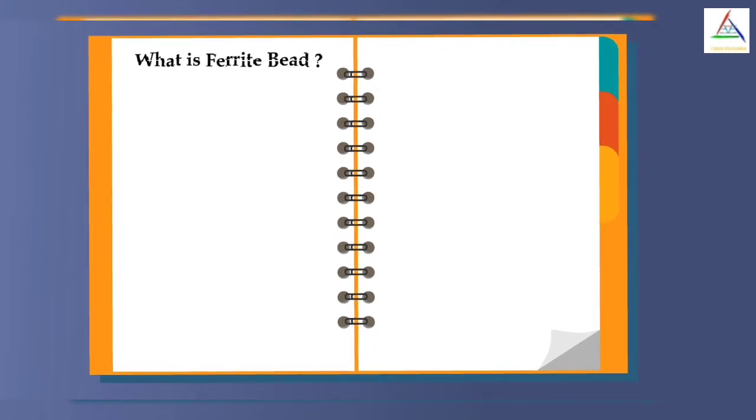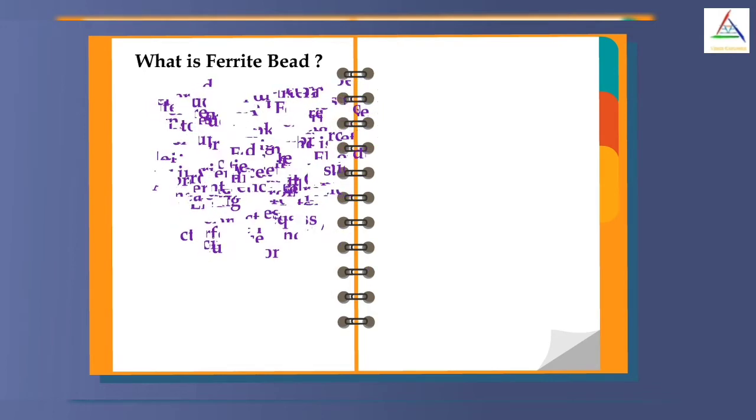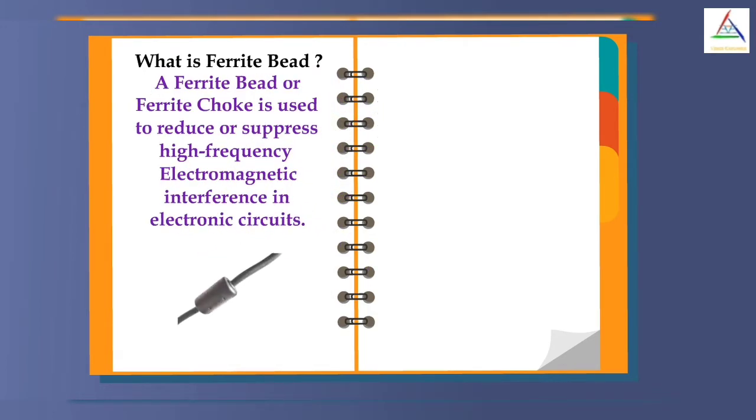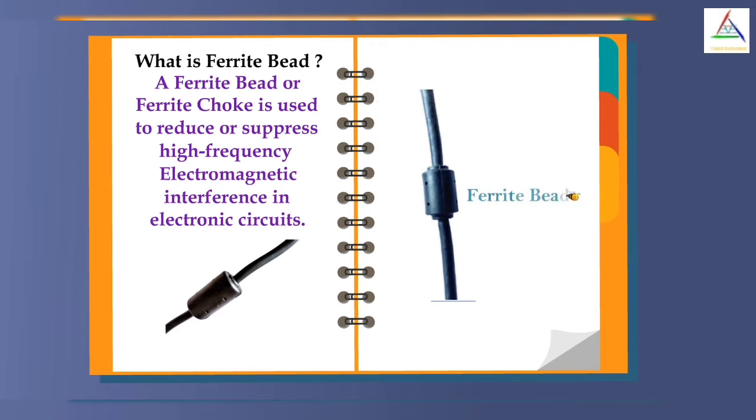First, let's understand what a ferrite bead is. A ferrite bead or ferrite choke is used to reduce or suppress high frequency electromagnetic interference in electronic circuits. It's a hollow cylinder made of ferrite, which has magnetic properties and is made from iron oxide alloyed with other metals.